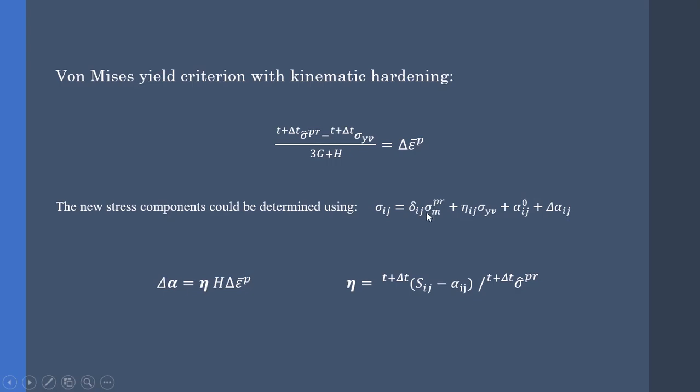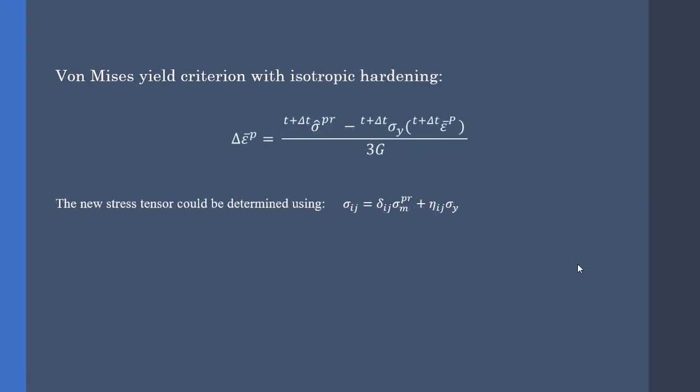In which sigma m is the mean stress and nu is the flow tensor. For isotropic hardening, the process is similar. Nonetheless, the equation for equivalent plastic strain should be solved numerically using the Newton-Raphson scheme for instance. And the new stress tensor could be determined using the following equation. Note that we don't need the alpha or the increment of alpha for isotropic hardening.